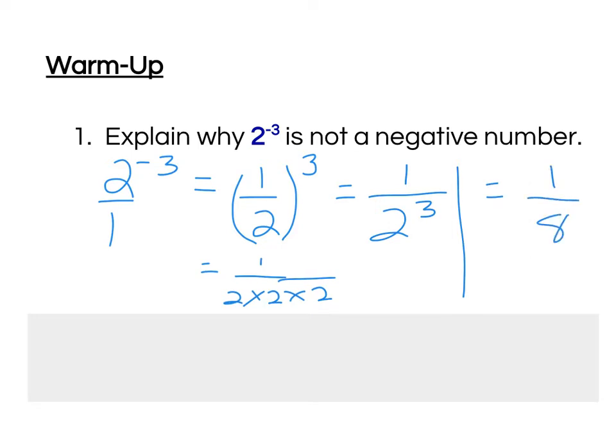So, how would I explain that 2 to the power of negative 3 is not a negative number? I would discuss how a negative exponent can be written as a positive power by simply taking the reciprocal of the base and changing that value to a positive number. And that's it.